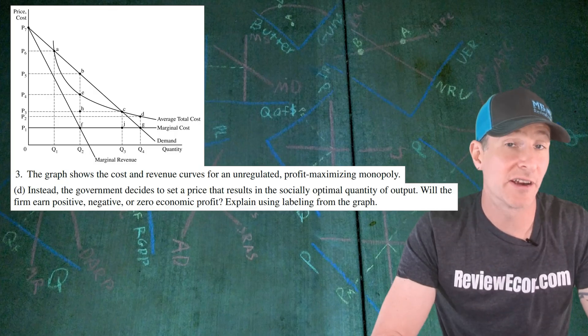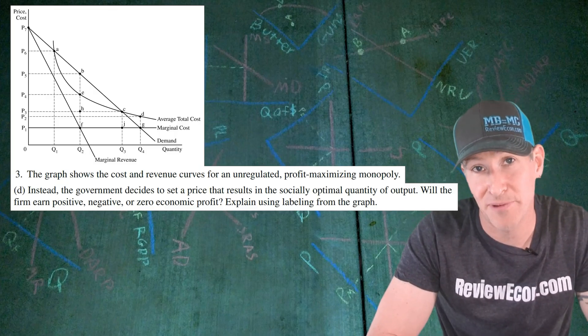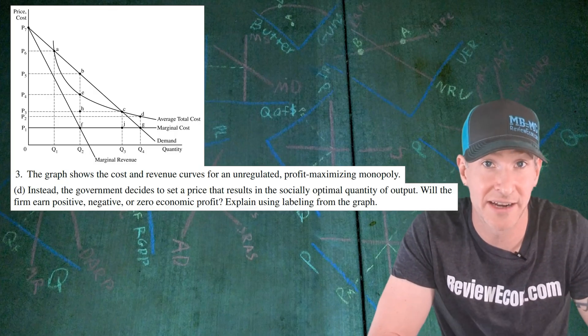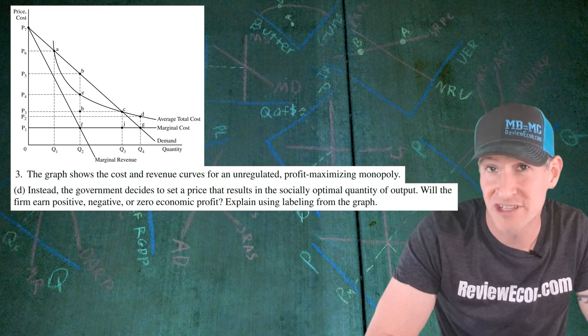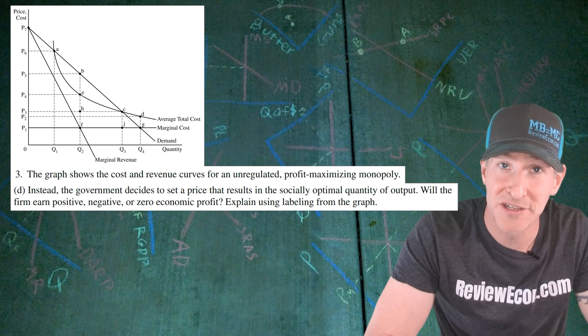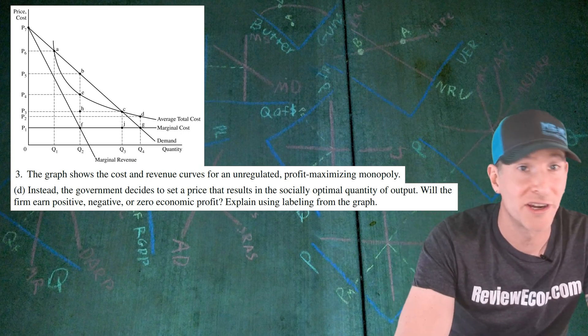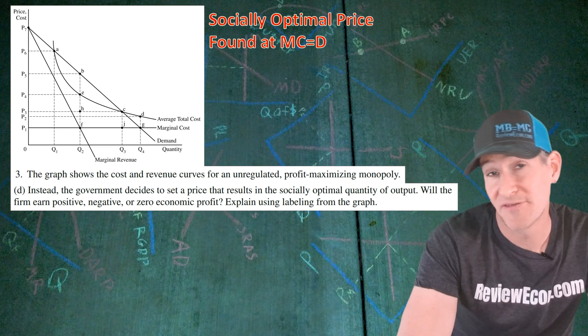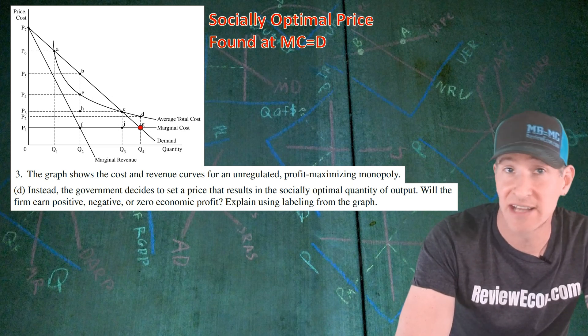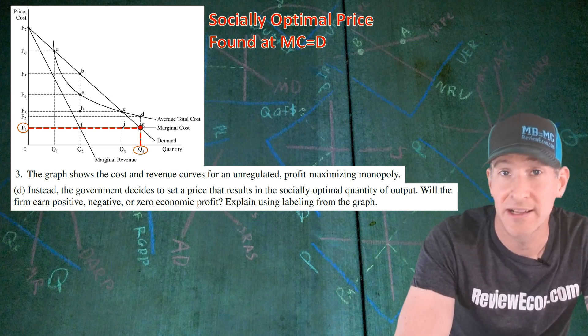For part D, we are told instead the government is going to set the price that results in the production of the allocatively efficient quantity. We are asked if at that quantity the firm earns positive, negative, or zero economic profit and we have to explain using labels from the graph. As I mentioned earlier, socially optimal is found where marginal cost equals demand and that's going to be found at point G. That gives us a price of P1 and a quantity of Q4.